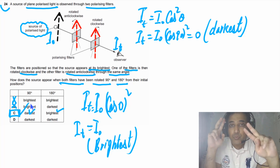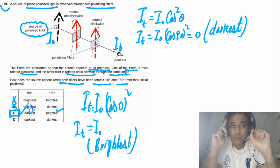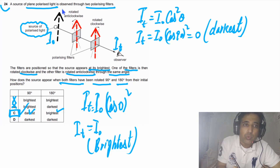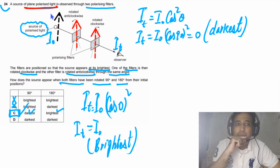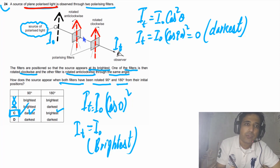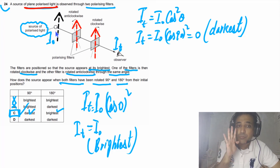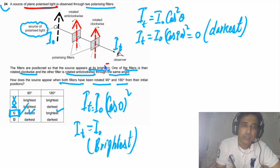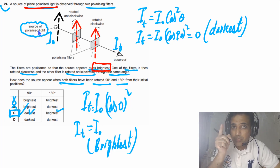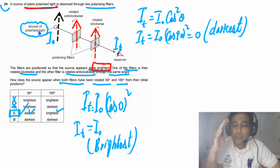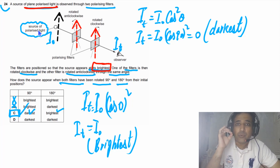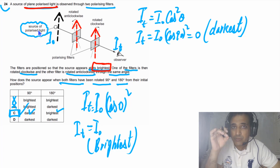Two main problems students face with this type of question: first, ignoring that the light is plane polarized; second, difficulty determining whether it is vertically or horizontally polarized. To resolve this, use the fact that it is initially at its brightest — this tells us the light is vertically polarized. With clear understanding of these points, polarization questions are not difficult. Please leave any questions in the comments and I will answer as soon as possible.